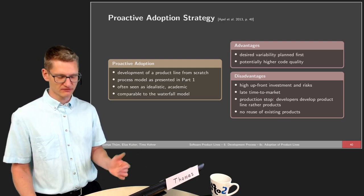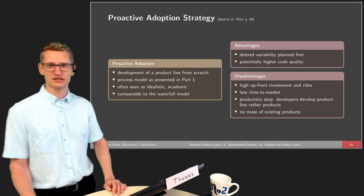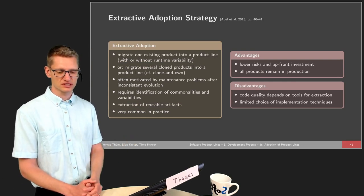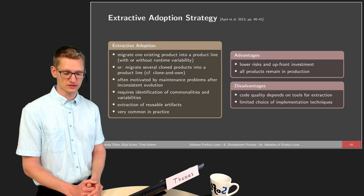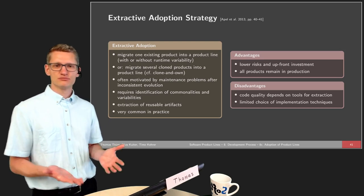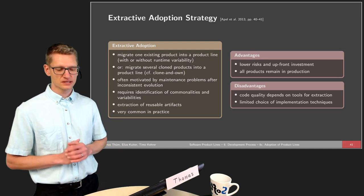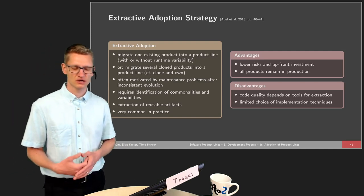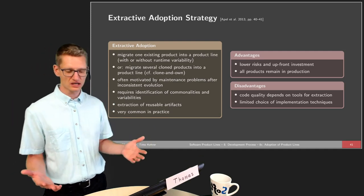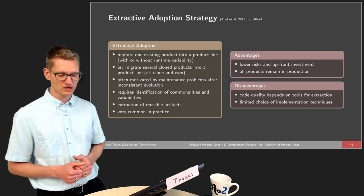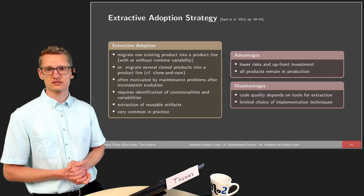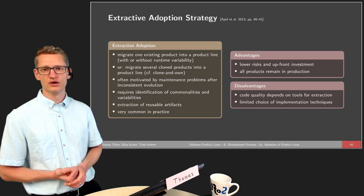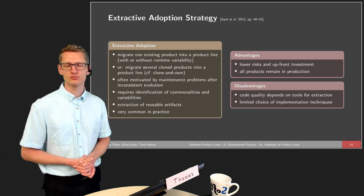The proactive strategy has advantages and disadvantages, as do the other two techniques. The second strategy is the extractive adoption strategy. The main improvement over the proactive approach is that we incorporate existing products. Whenever we have existing products we try to use them and their artifacts — migrating one existing product or several cloned products into a product line.